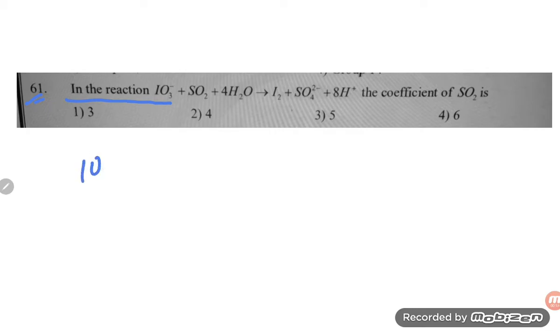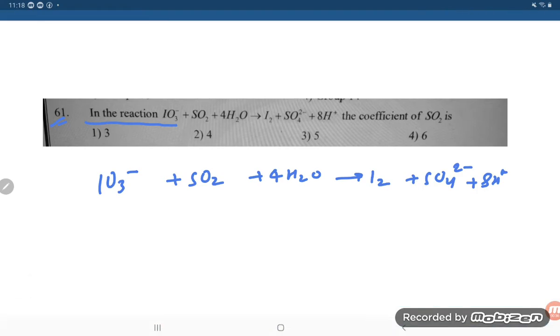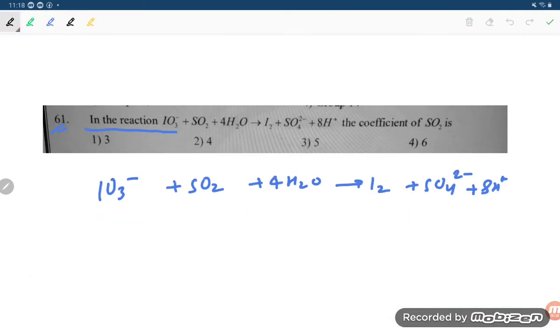So dear student, IO3 minus is there plus SO2 plus 4H2O, it is giving I2 plus SO4 2 minus plus 8H plus. Let us try to solve by oxidation number method. You can solve by ion electron method also to get the answers right.